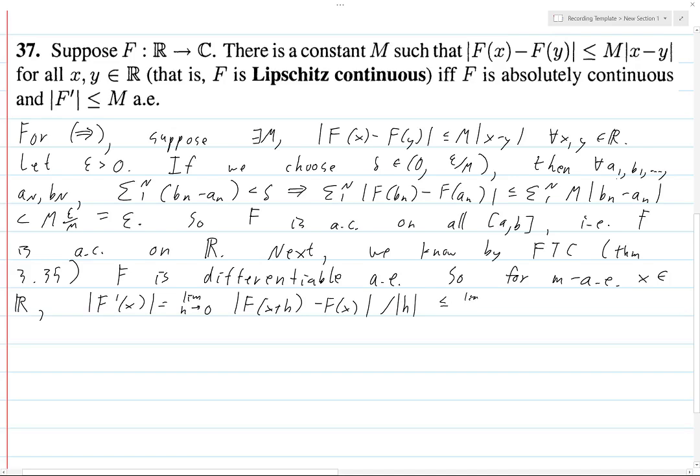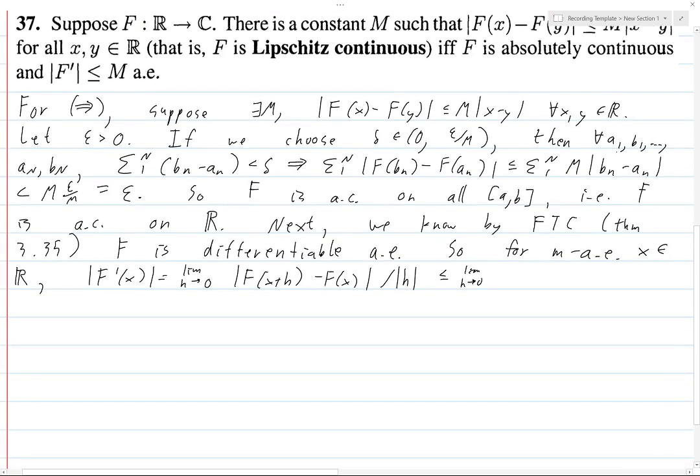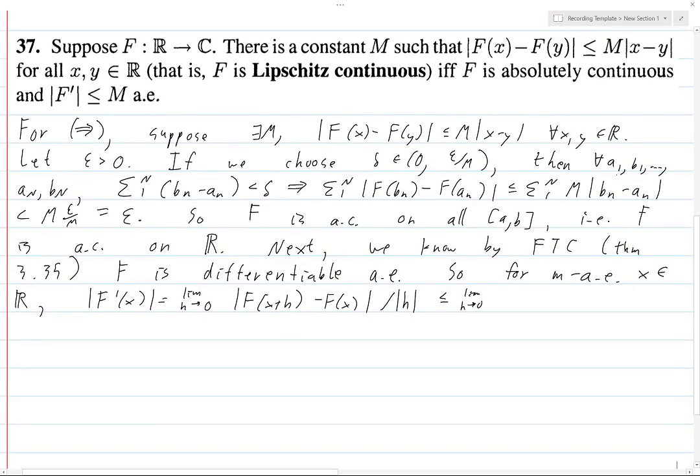Well, we apply our assumed estimate, and this just becomes M times |x + h - x|, which is just h, and then this divided by h, and so that's just going to be the constant M, and that's exactly what we wanted.